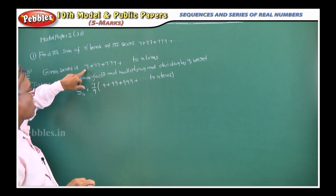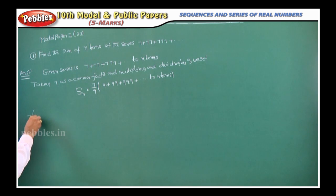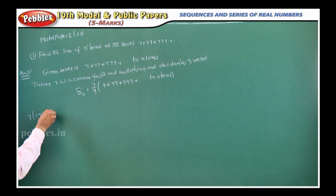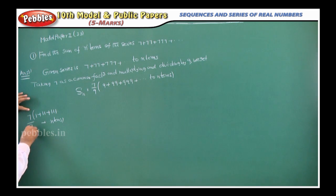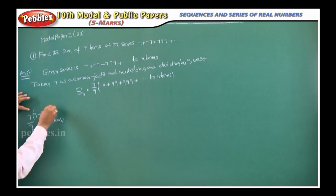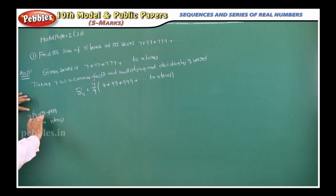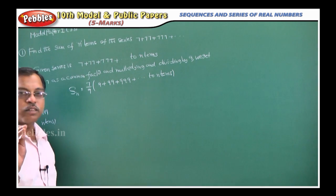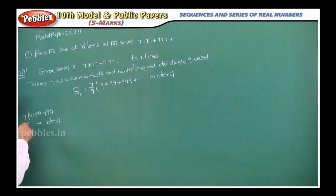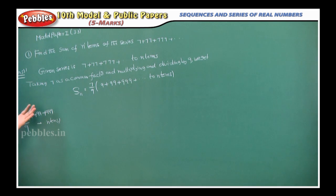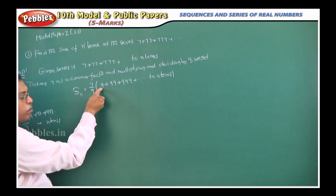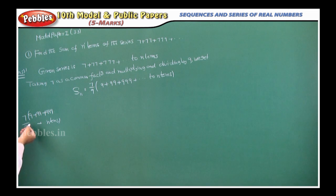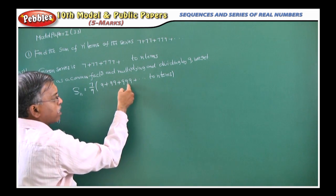Here, you have to take 7 as a common factor. That means, if I take 7 out, it becomes 7 into (1 plus 11 plus 111 plus dot dot dot), n terms. And you have to multiply and divide by 9 — if you multiply, all these become 9, 99, 999. So everything you have to convert in terms of 9. You have to eliminate the 7 inside the bracket, because otherwise you cannot use the formula. So first, take 7 as common factor, giving 1 plus 11 plus 111 plus dot dot dot, n terms. Then multiply and divide by 9, so it becomes 7 by 9 into (9 plus 99 plus 999 plus dot dot dot), and so on.